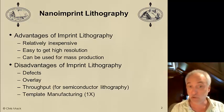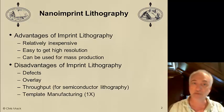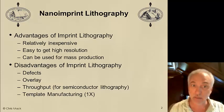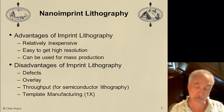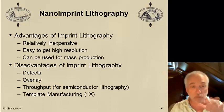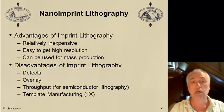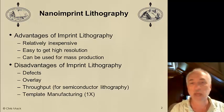Another problem is overlay. If your application does not require one pattern to be aligned and overlaid on top of another pattern, imprint is a very nice way to go. But in semiconductor manufacturing, we need very tight overlay tolerances — our ability to print one pattern on top of another has to match within a few nanometers. That's very difficult to do with imprint, although we have some solutions.